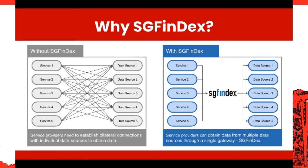Some would argue that this design has a single point of failure, which is SGFindex. But keep in mind that SGFindex is not a single connection, but a platform that is architected to be highly available, just like how you would have designed your own system. With the introduction of SGFindex, the mesh network breaks down and the connections become more streamlined, with service providers and data sources going through SGFindex as the single gateway to get connected to each other.